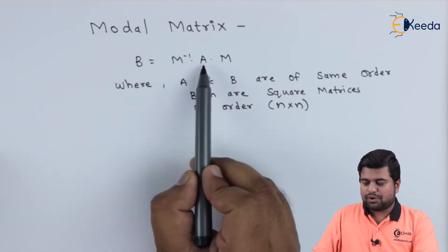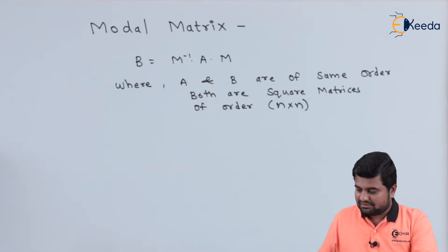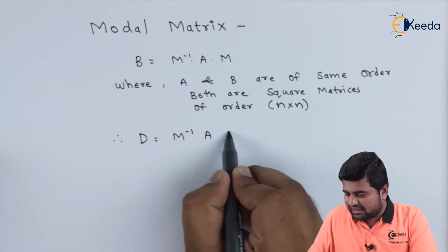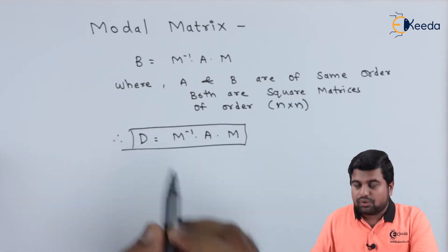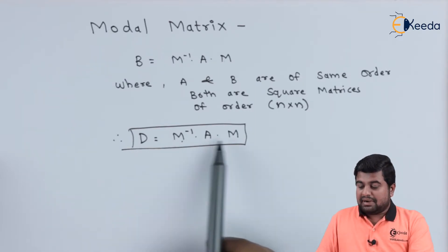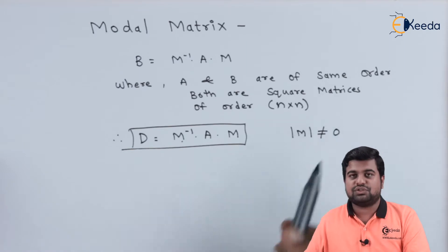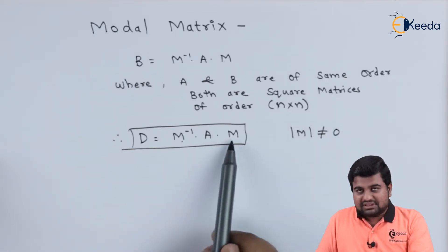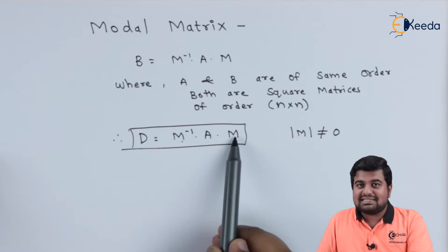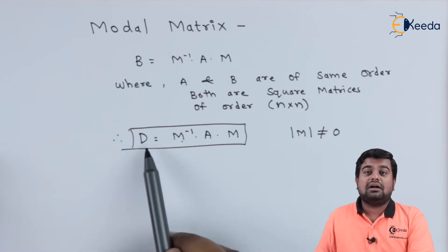Now M is responsible for converting these two matrices into similar matrices. If the product M inverse into A into M comes out to be a diagonal matrix, that is only diagonal elements are present, then we say D equals M inverse into A into M. Matrix A is the given matrix and M is a non-singular matrix, meaning its determinant is not equal to zero. This M is called the modal matrix, and it is totally responsible for converting A into a diagonal matrix, that is diagonalizing the given matrix A.